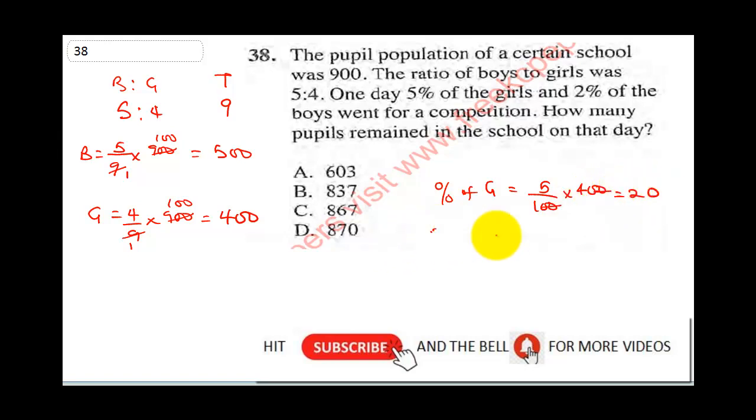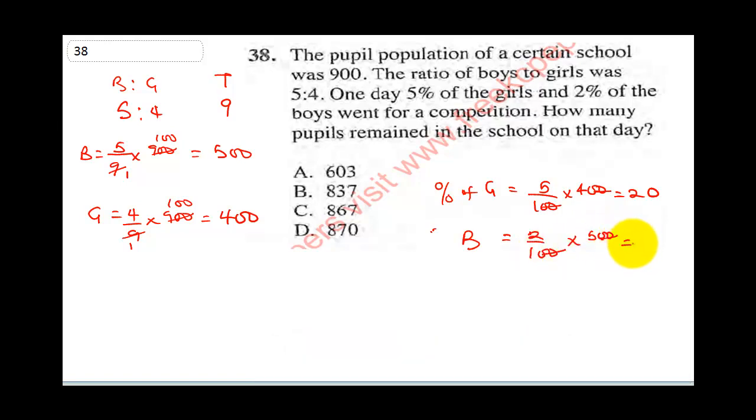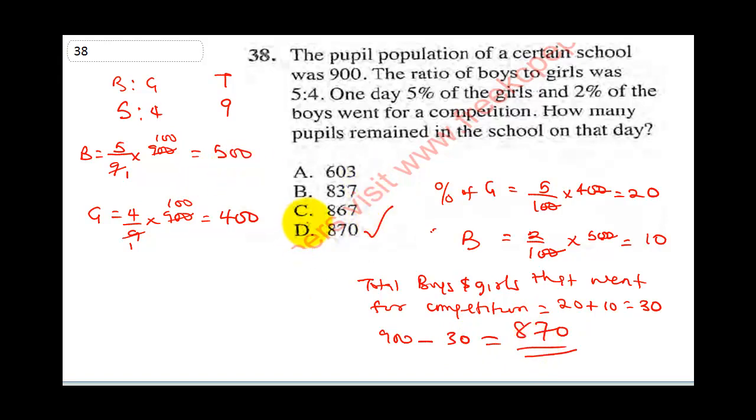And percentage of boys that went for competition will be 2 over 100 times 500. Double zeros cancel out, this will give us 2 times 5, that will be 10. So total boys and girls that went for competition will be 20 plus 10, that will give us 30. So how many people remain in the school? That will be 900 minus 30, and that will give us 870. So 870 students were actually left in the school. Final answer is D.